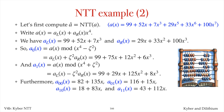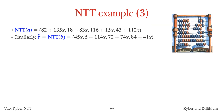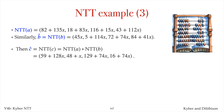Next, we reduce a0 modulo x squared minus zeta to get a00, reduce a0 modulo x squared plus zeta to get a01, reduce a1 modulo x squared minus zeta cubed to get a10, and reduce a1 modulo x squared plus zeta cubed to get a11. Thus, the NTT of a is the sequence of degree-1 polynomials: a00, a10, a01, and a11. Here is the NTT of b, and here is the NTT of c, obtained by component-wise multiplication of the NTTs of a and b.